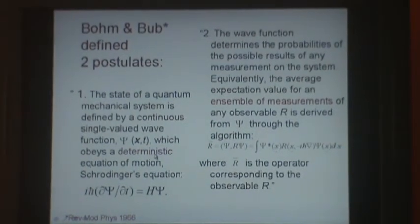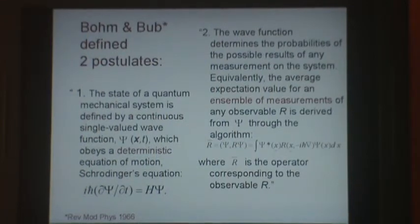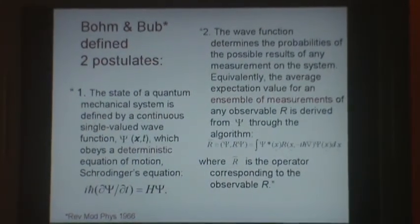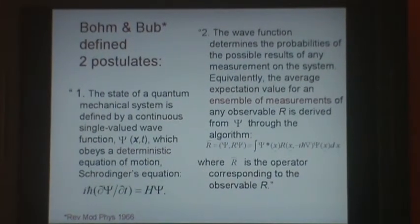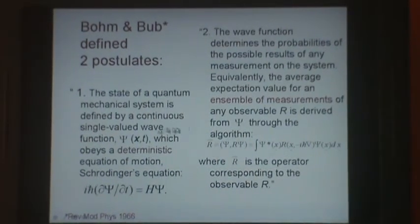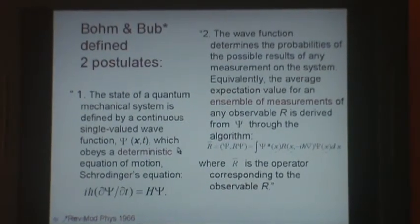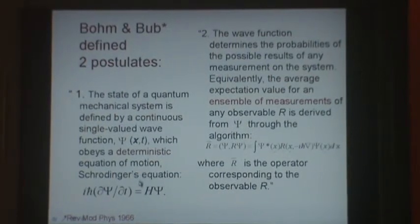So we arrive at the postulates of Bohm and Bub for quantum mechanics. There are two postulates. One is about theory and it's deterministic. The first postulate is, the state of a quantum mechanical system is defined by a continuous single-valued wave function psi of x, which obeys a deterministic equation of motion, Schrödinger's equation.